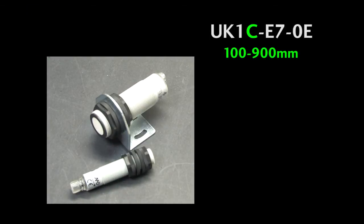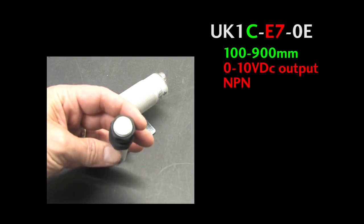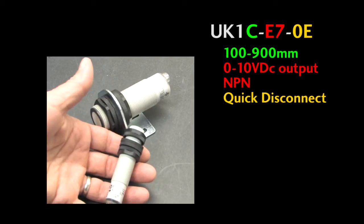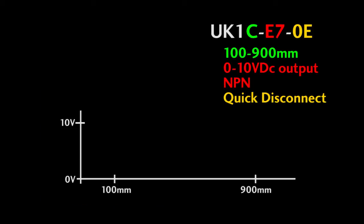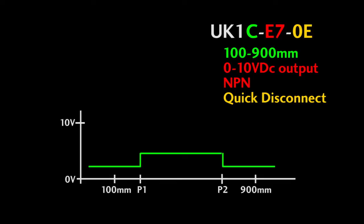I'm using this sensor which is a short range up to 900 millimeter sensor with an analog 0-10 volt output and an NPN output with a quick disconnect for the cable. This is a 100-900 millimeter sensor so we can set the detection range anywhere in here. That determines when the discrete output turns on and where the analog output starts and stops.